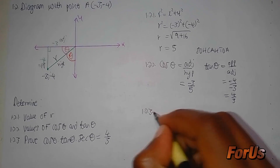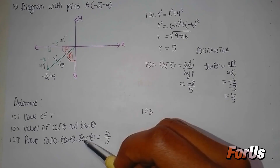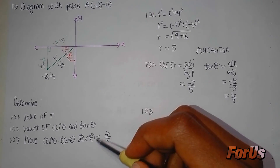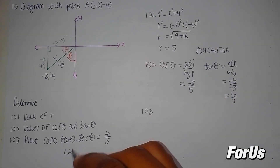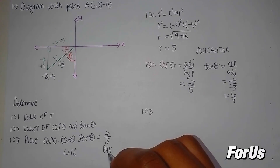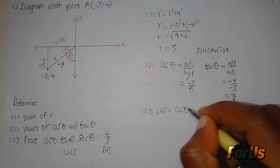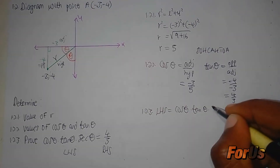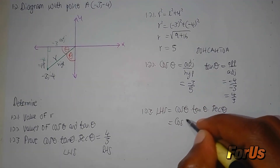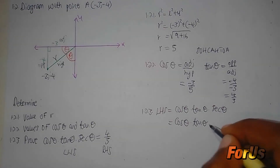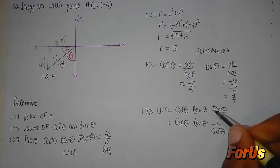For question 1.2.3, we need to prove that cos theta multiplied by tan theta multiplied by sec theta equals 4 over 3. Taking the left-hand side: cos theta times tan theta times sec theta. We know that sec theta equals 1 divided by cos theta.